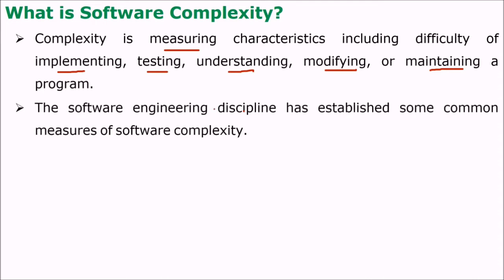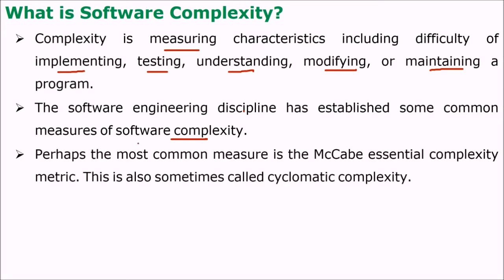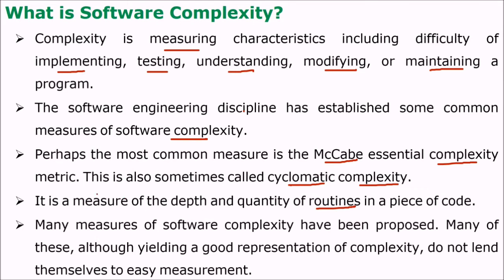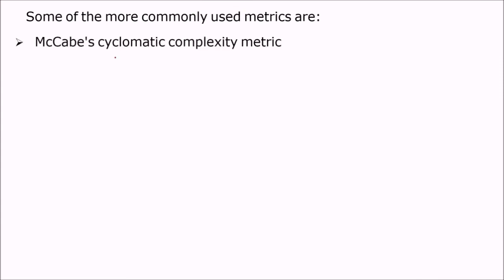The software engineering discipline has established various measures of software complexity, and the most common is McCabe's software complexity — the McCabe complexity metric, also sometimes known as the cyclomatic complexity. It is the measure of the depth and the quantity of routines in a piece of code, and there are various measures of software complexity that have been proposed, though many of them do not lend themselves to easy measurement. Some of these metrics are the McCabe cyclomatic complexity metric,